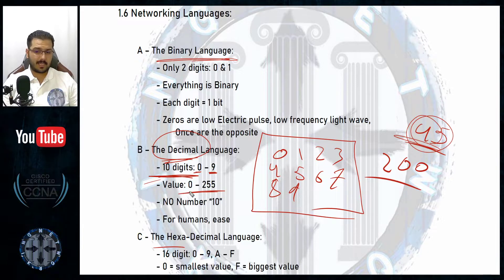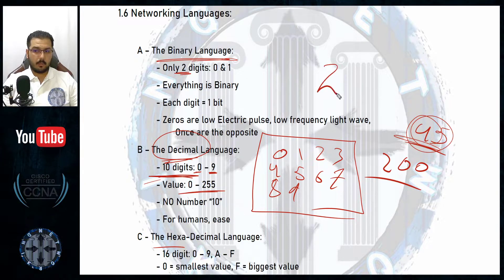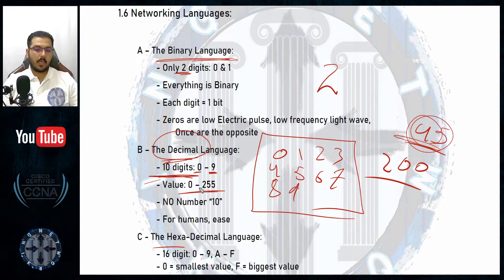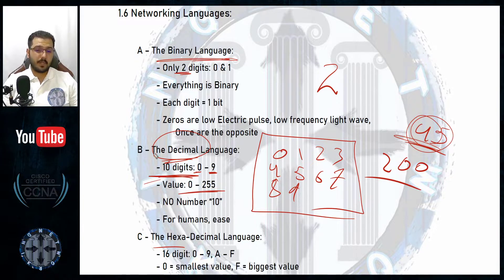The values inside the device vary between zero and 255, because the maximum value you can give using decimal inside the device is 255. This is because of the relation between the binary language — built on two, zero and one — and the power of two in mathematics. We will have four or five videos on languages and translating, so you will understand and master it.